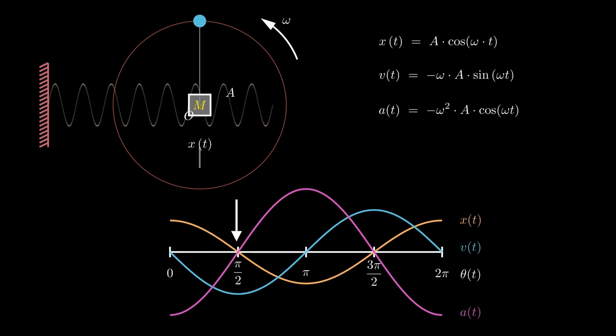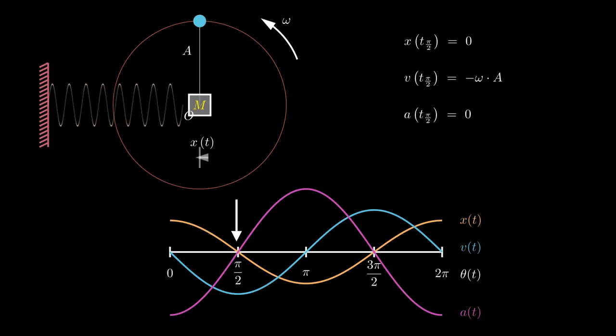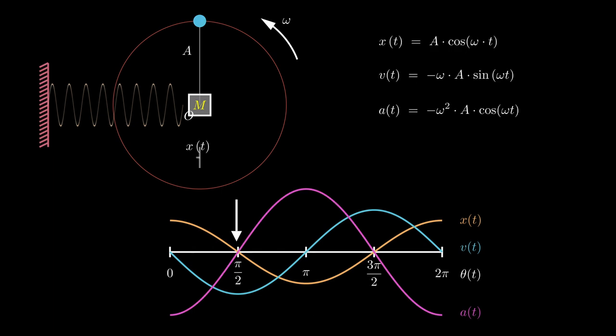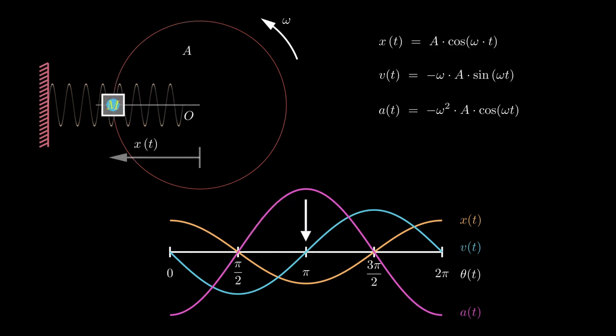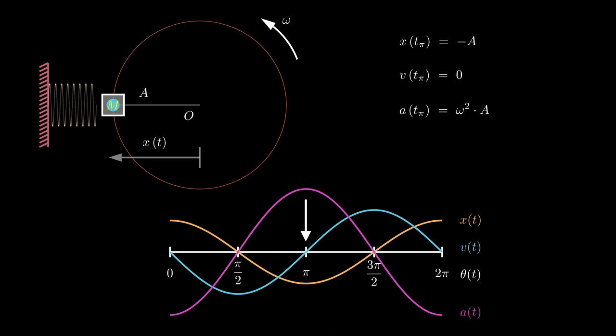As the mass moves towards the equilibrium position O, the acceleration becomes zero at that specific point. However, the mass achieves its maximum velocity due to the momentum generated, which propels it to continue moving in the negative x direction. As the mass starts moving away from the equilibrium position, acceleration emerges directed towards point O, leading to a force that causes the mass to decelerate. As it reaches the extreme left, the velocity of the mass drops to zero, and the mass loses its momentum and comes to rest.